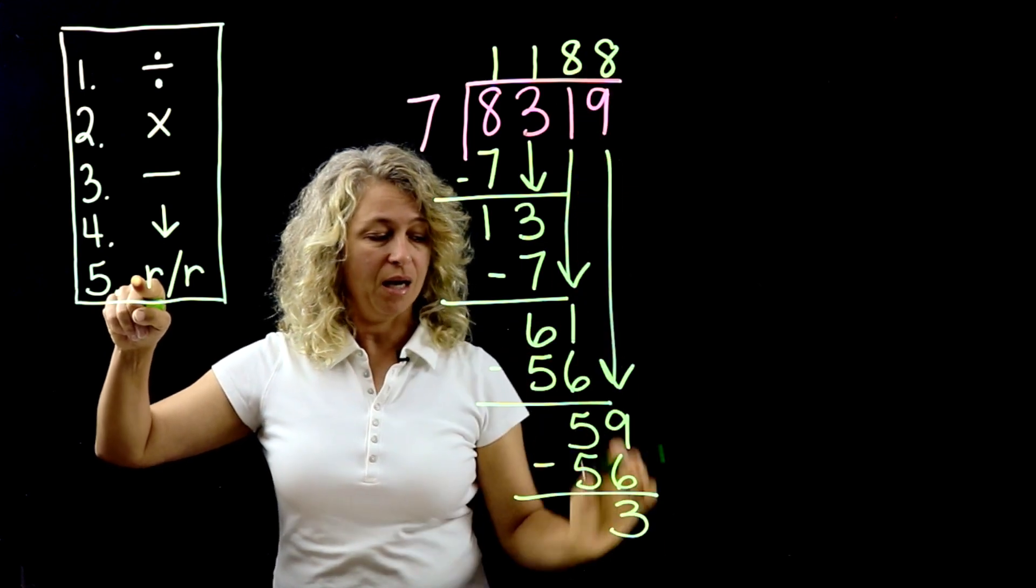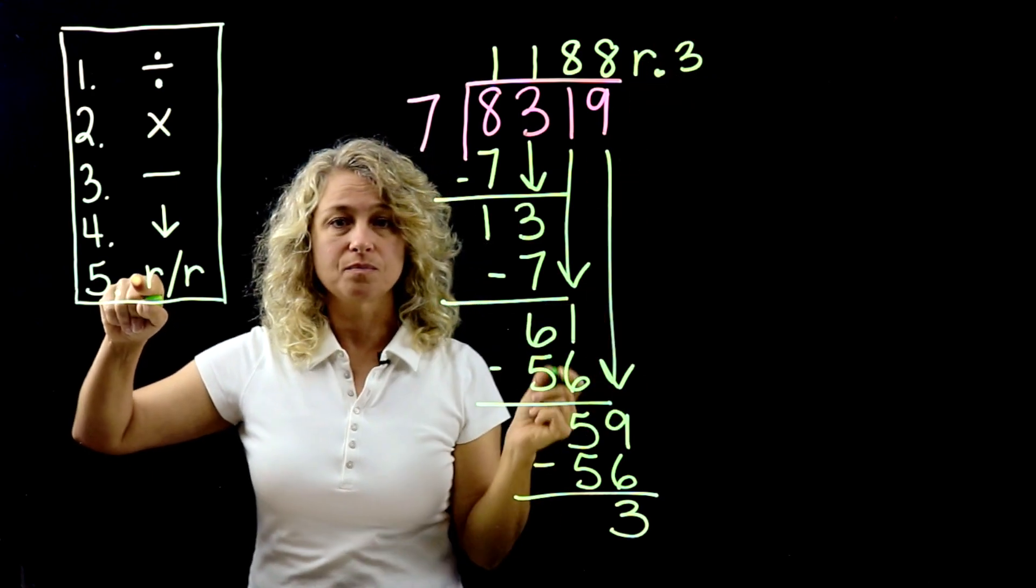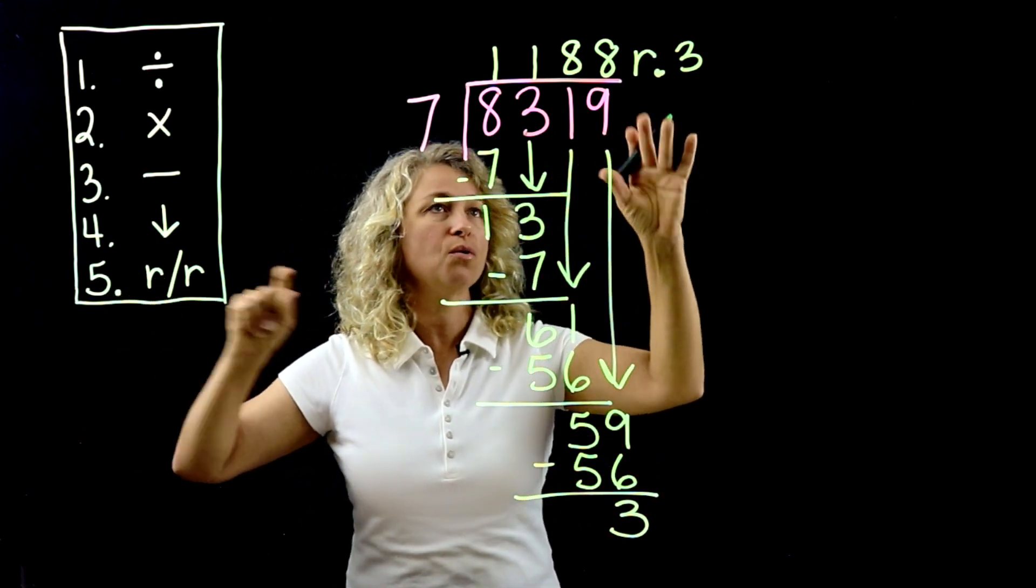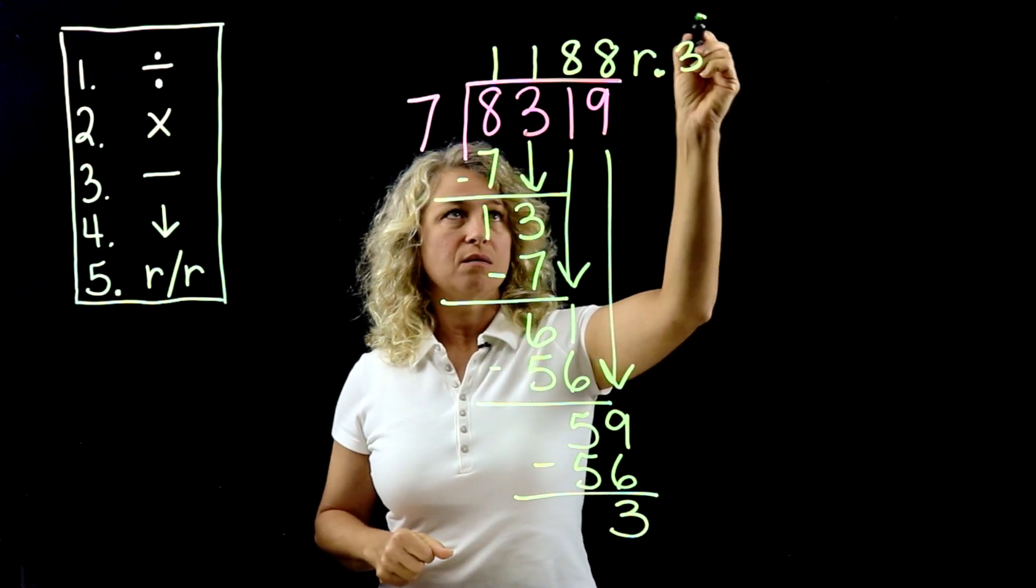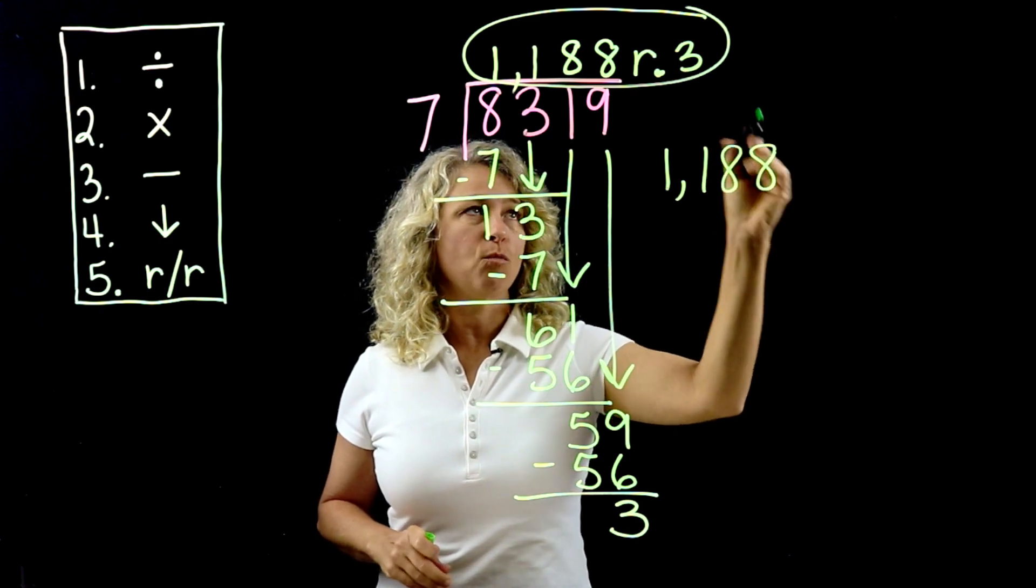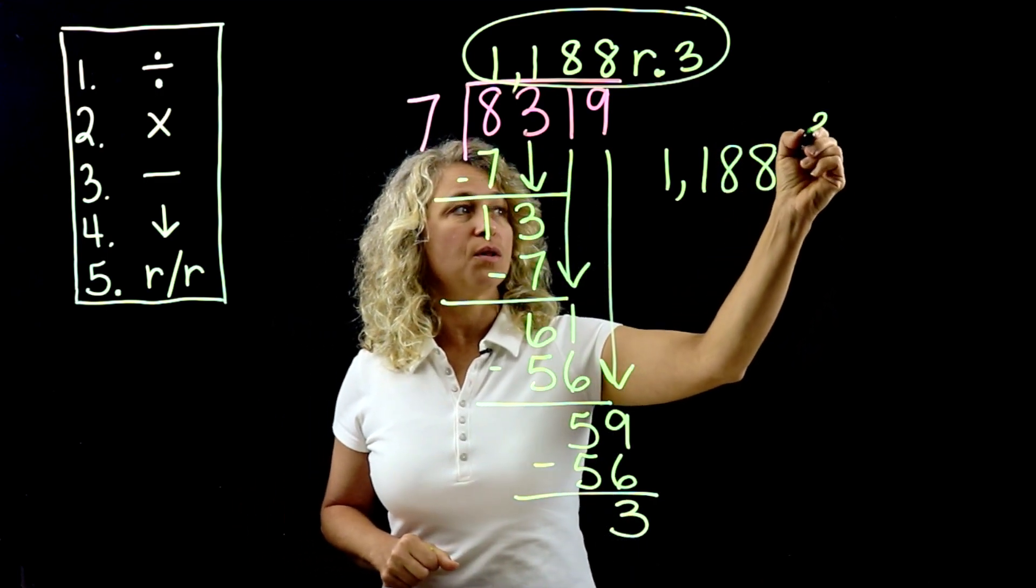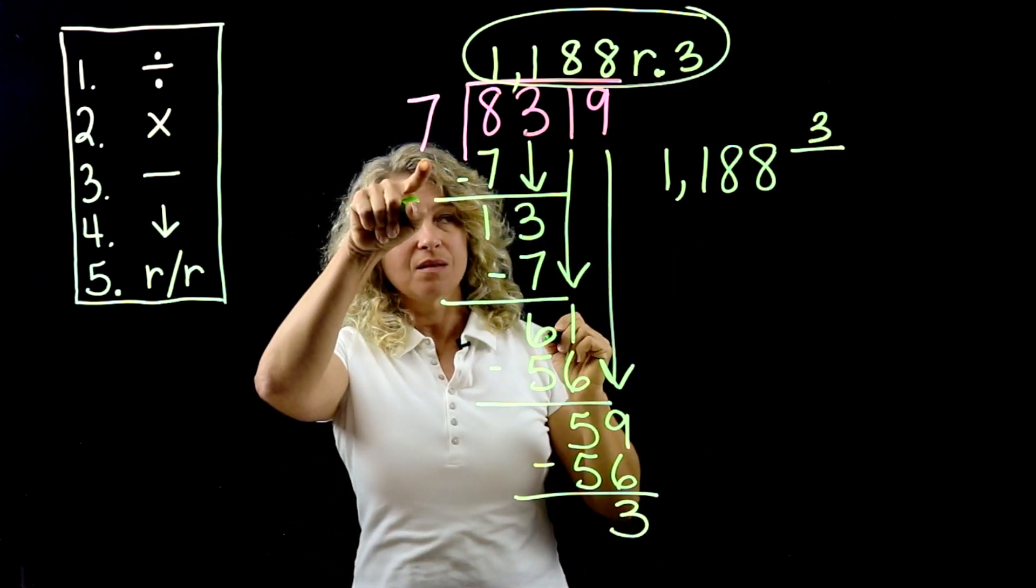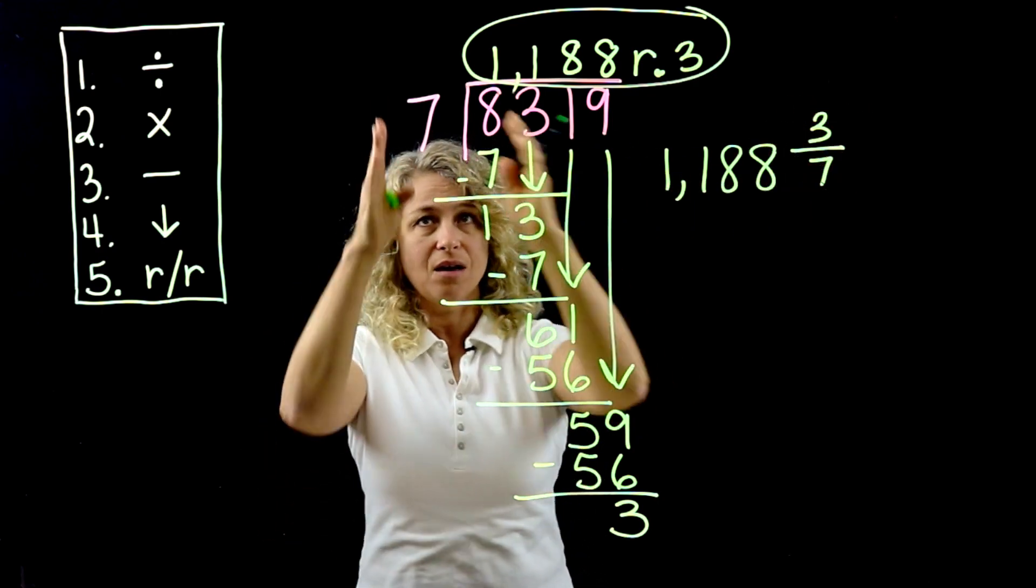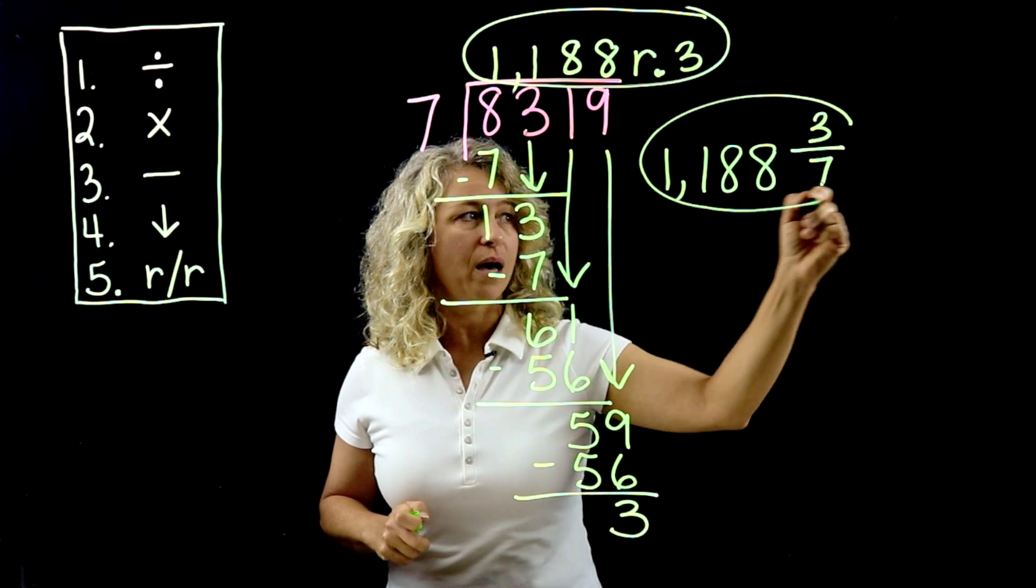This is our remainder, and there's a couple, two or three different ways you could write this. But for today I want to show you, you can write this as the quotient like this: 1,188 with a remainder of 3, or you can say 1,188 with 3 as a fraction over the denominator 7. Okay, because it's 3 out of 7, and this will always be your denominator. All right, so here's another way you can write it. This means the same thing.